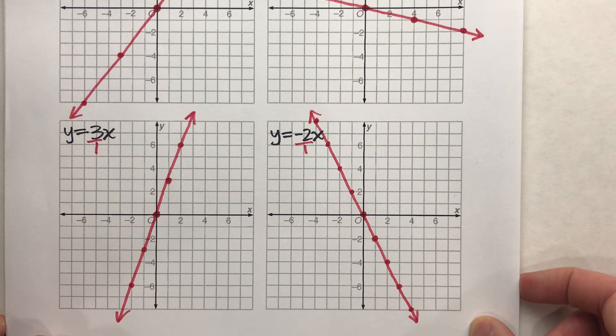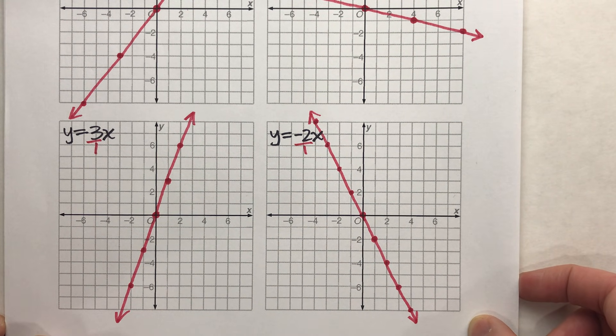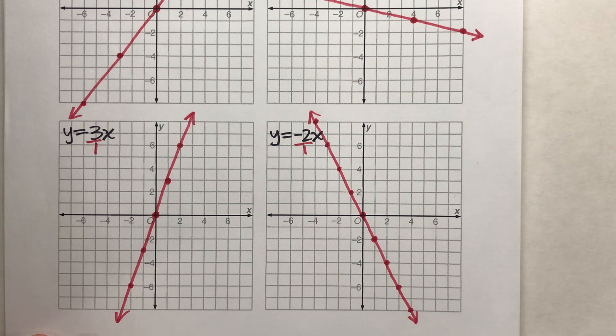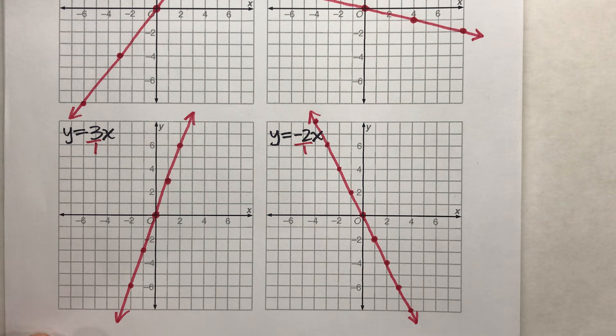As you're graphing, just be careful of positives and negatives. Remember, we always move to the right — if it's positive, it's going to go up and to the right; if it's negative, it's going to go down and to the right. Hopefully you found this video helpful. If you did, please hit that like button and subscribe — it really helps us out. Good luck on your math, and I will see you next time.